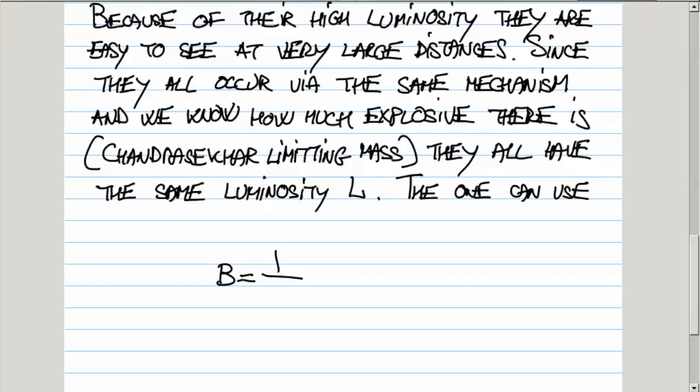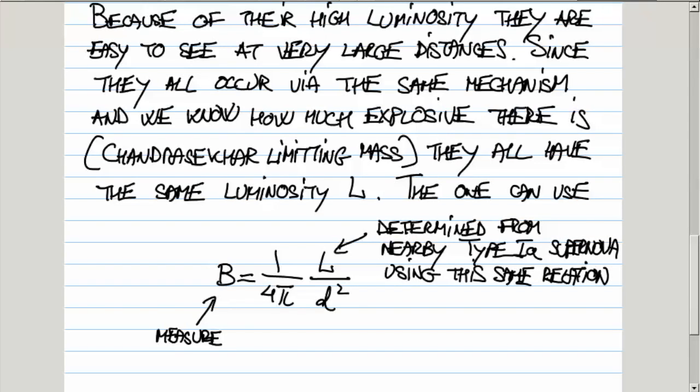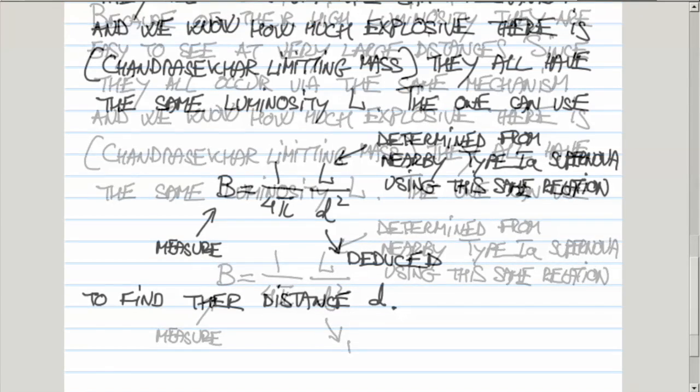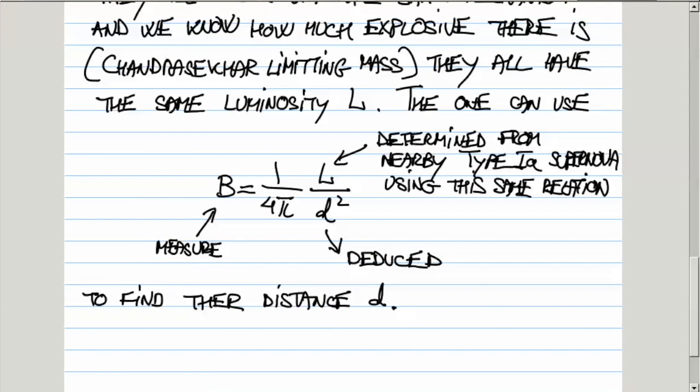So again, this fundamental relation that is used over and over in astronomy between brightness that we measure—then we measure L for nearby type Ia supernova using this same relation where we know the distance from some other technique. And then we measure brightness. We know how intrinsically bright they are. We know their luminosity, and then we deduce their distance. And this method is used to find the distances to the most distant galaxies in the universe.